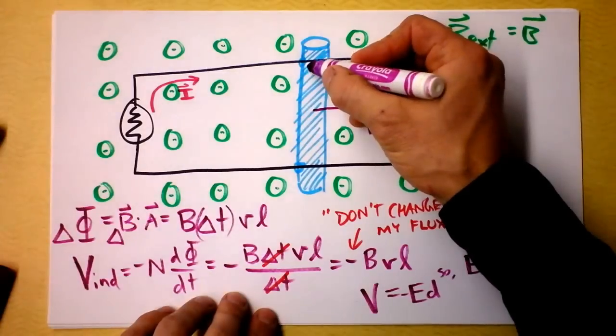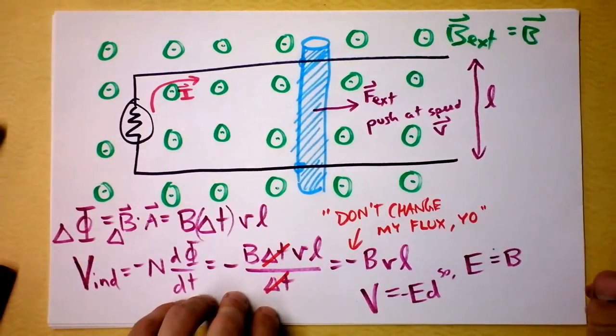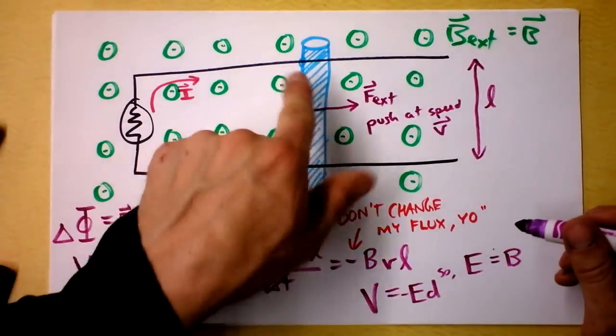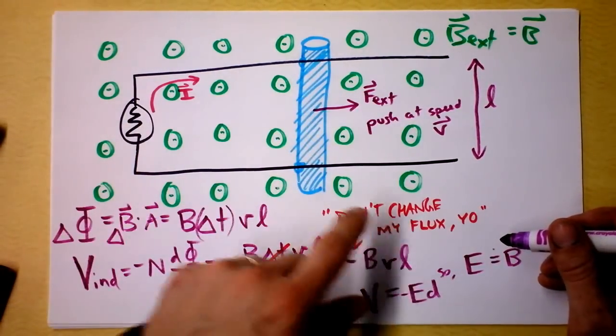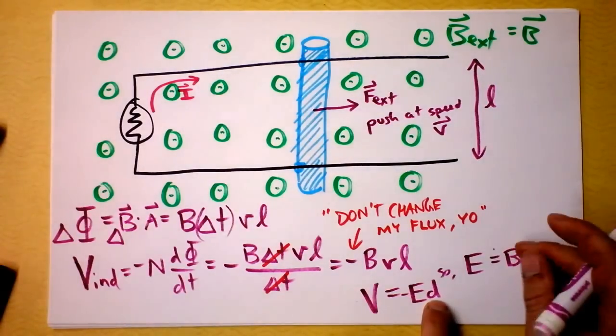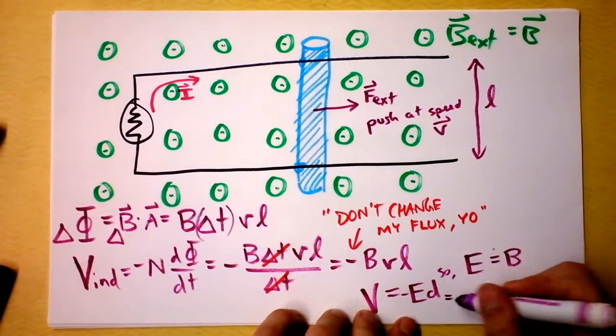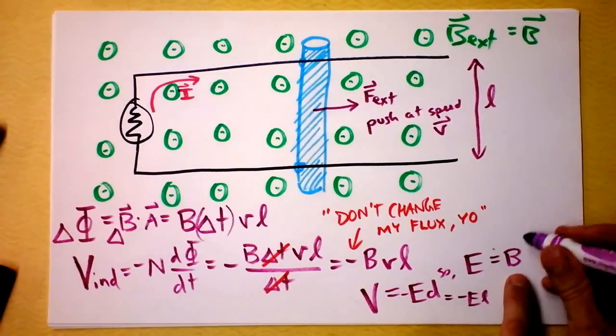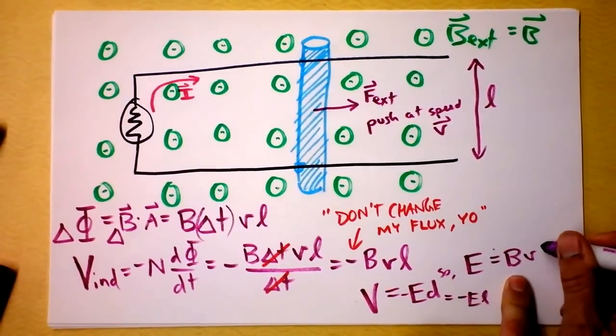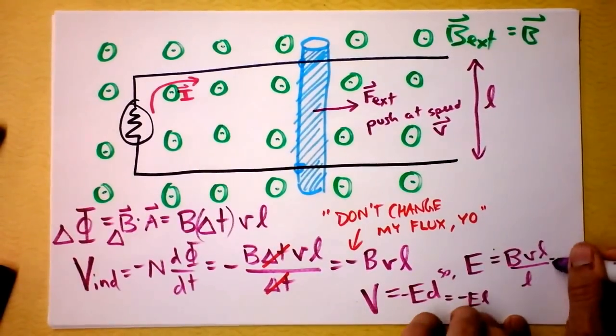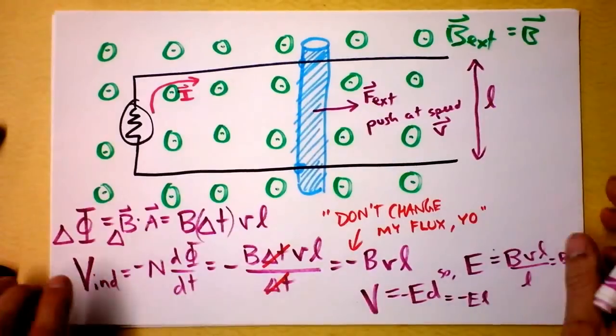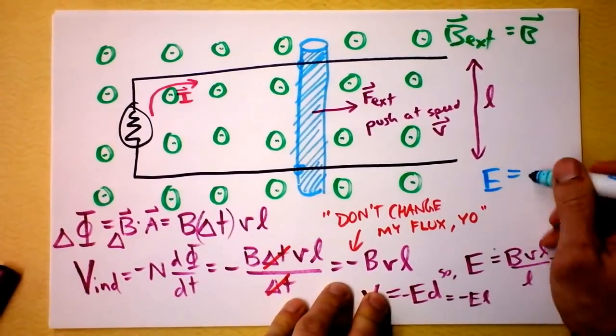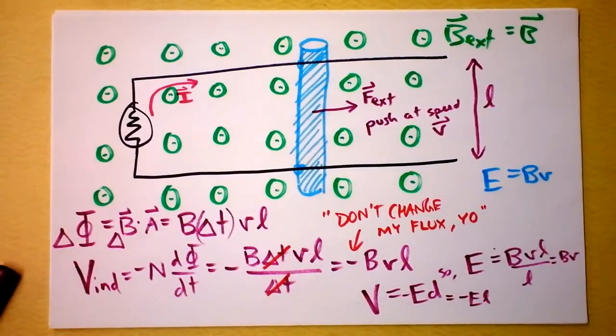We're going to find the electric field to simply be B times, wait a second, what is this D? The electric field exists inside this rod. That's where the electric field will be existing because that's where the motion is. That's what's changing the area. So that distance, that L is L, and this distance here, this D, should also be L. This is negative EL. And I'm going to say that E then is BVL divided by L, which is B times V. Electric field induced is the magnetic field times how fast you're going.